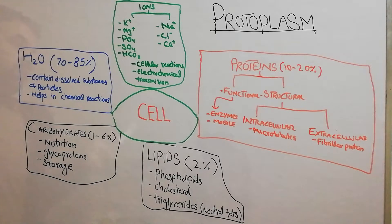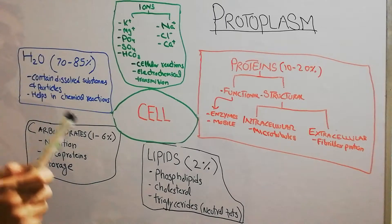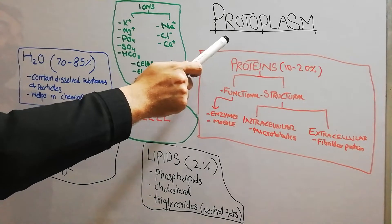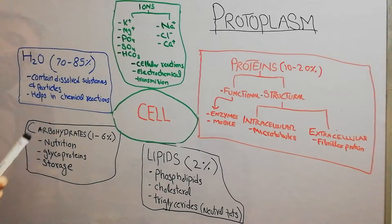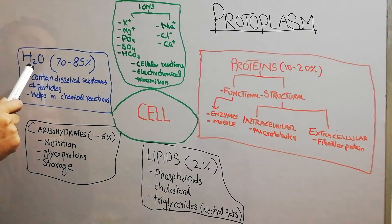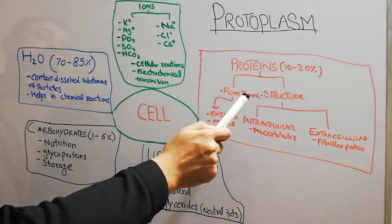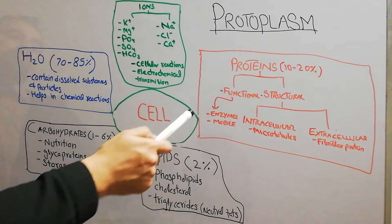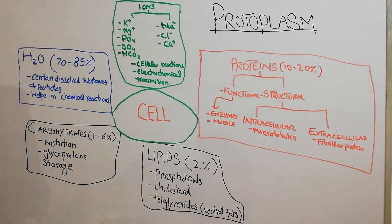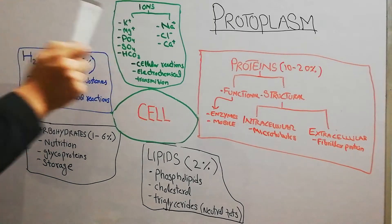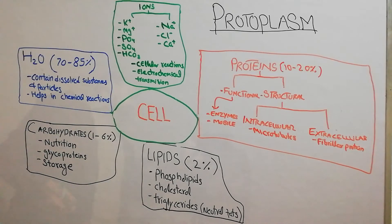To summarize: the human body is made of organs — brain, liver, lungs, kidneys, etc. The organs are made of cells, but the cells themselves are made of protoplasm. Protoplasm is the combination of water, proteins, ions, lipids, and carbohydrates. Most abundantly we have water, then proteins at 10 to 20% which may be structural or functional, intracellular or extracellular, then lipids at about 2%, and then carbohydrates and ions. That's all about the protoplasm.